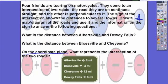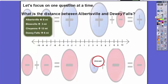We're going to focus on what is the distance between Albertsville and Dewey Falls. Albertsville I see is eight miles to the left. Remember when we are talking distance we always start at zero. I'm at my sign and it tells me it is eight miles to the left. That is the direction my arrow points so it's going to be a negative number. Dewey Falls is to the right and it is six miles.